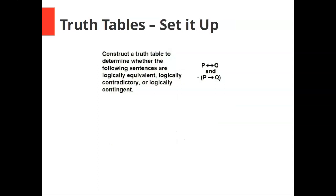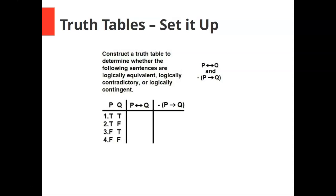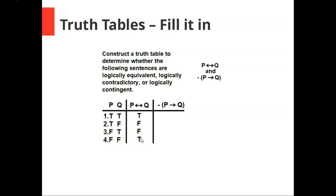Here's one more example: p if and only if q, and not the case that if p then q. We set up our truth table. For the biconditional, it's only true when both components are true or both components are false: true, false, false, true. So there's our column for the biconditional.